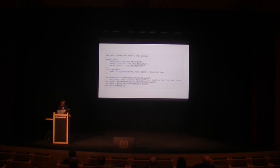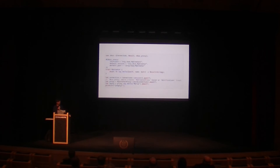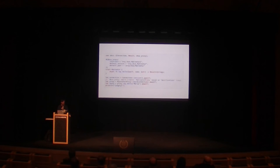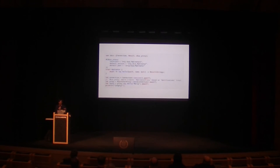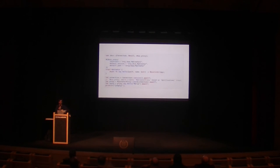The client side for the same thing is very similar. Instead of creating an implementation — because the implementation is on the other side — you just want to call that implementation. You create something called a trait in Rust, which is similar to interfaces in other languages, where you just define an API and don't implement it. You create the same connection, create a proxy — just a proxy to the other side — give it the interface name, and call the method as if it's a local method. And it works.